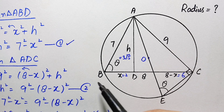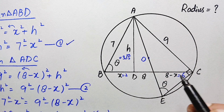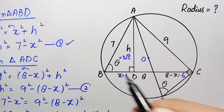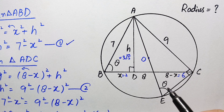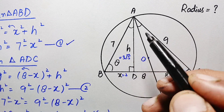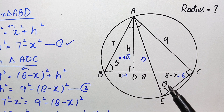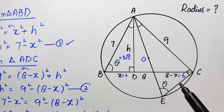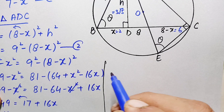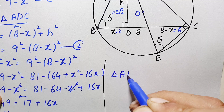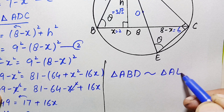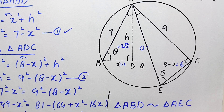We also know that any chord subtending the same arc makes equal angles in the same region of the circle. Chord AC subtends angles at points B and E, which are on the same side, so angle ABD equals angle AEC — let both equal theta. Now looking at triangles ABD and AEC: both have a right angle, and both share angle theta, so the third angles are also equal. These are equiangular (similar) triangles: triangle ABD is similar to triangle AEC.